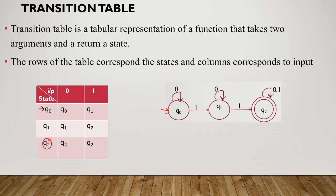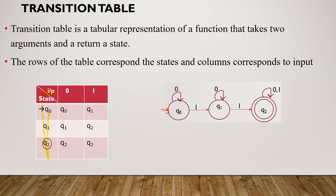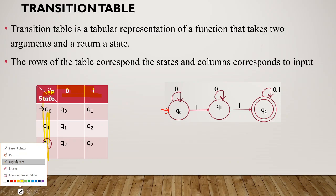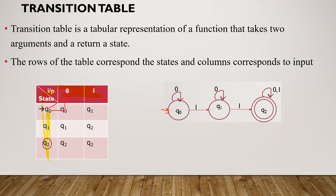Now we fill in the data. The initial state is Q0. In Q0 state with input 0, we apply del(Q0, 0) which gives Q0. In Q0 state with input 1, del(Q0, 1) gives Q1.